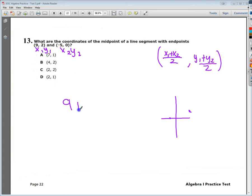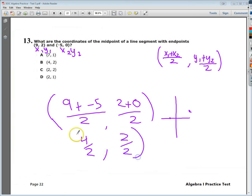So I would do 9 plus negative 5 over 2, and the y value would be 2 plus 0 over 2. So if I do 9 plus negative 5, that's the same as 9 minus 5. So I end up with 4 over 2, and 2 plus 0 is 2, of course. So I'm going to reduce these down, and I get 2 and 1.